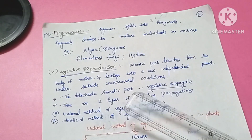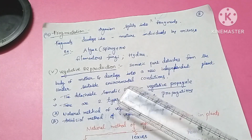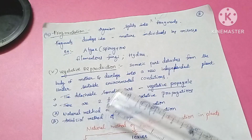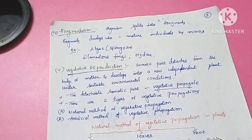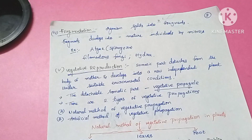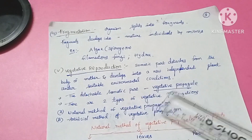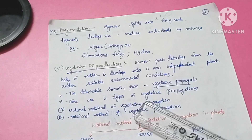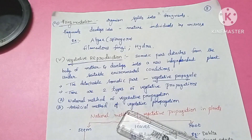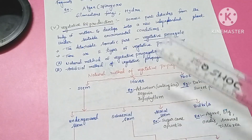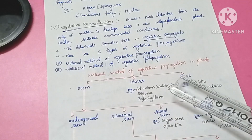There are two main types of vegetative propagation: the natural method and the artificial method. In the natural method, somatic parts — root, stem, and leaf — are involved. These parts detach from the parent plant and develop into a new individual.